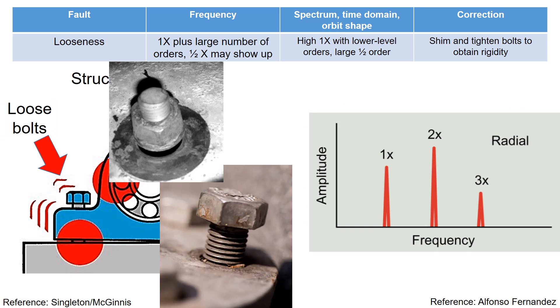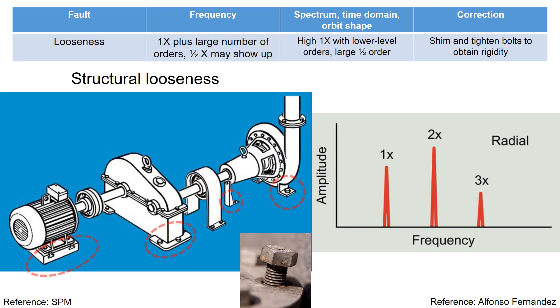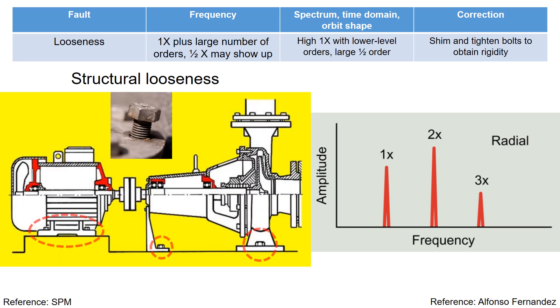Structural looseness can result in elevated vibration at frequencies such as 1x, 2x, 3x, and beyond. Indeed, it is crucial to examine structural looseness when there is a noticeable upward trend in the frequency spectrum over time. So, conducting a thorough inspection of the base bolts is essential.